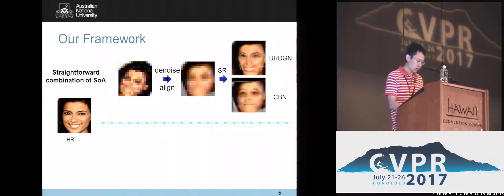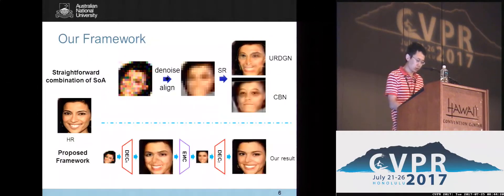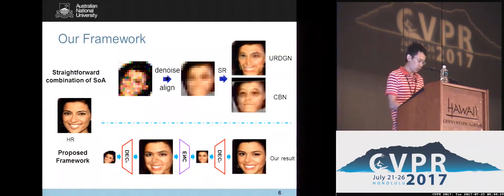On the contrary, since we do denoise and alignment in the first decoder, our results contain more details and are more similar to the ground truth. Due to residual noise, artifacts still appear in the upsampled faces. In order to eliminate the artifacts, we employ an encoder, because small-scale artifacts will be reduced when downsampling.